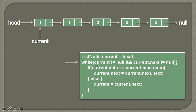First, the while loop condition is checked — current is not null because it points to the first node, and current.next is also not null because it points to the second node. Therefore the while loop condition is true and it will check whether current node data equals current.next data. Current data is 1 and current.next data is also 1, so they are equal — we have encountered a duplicate.